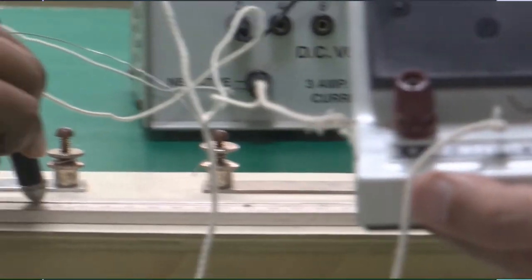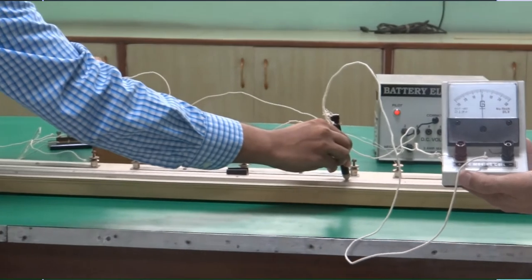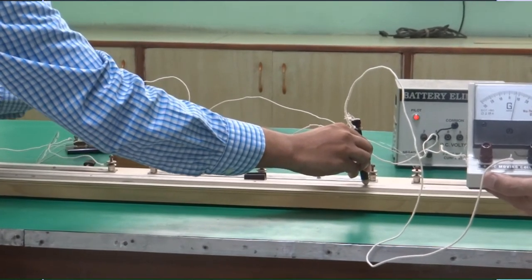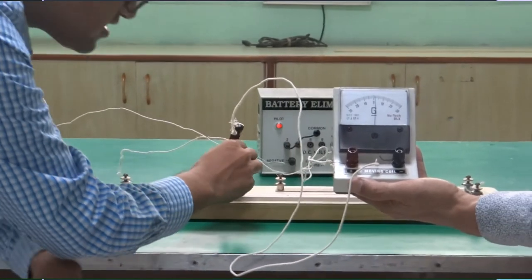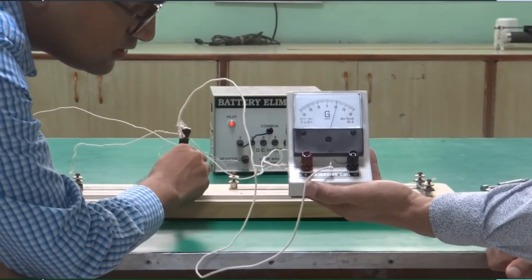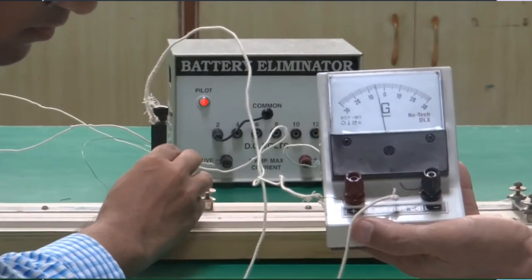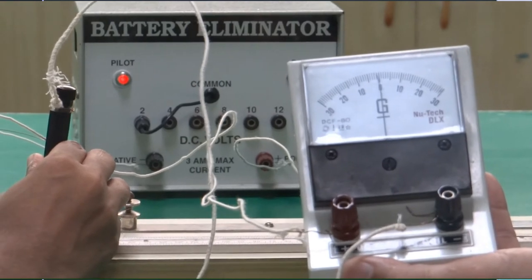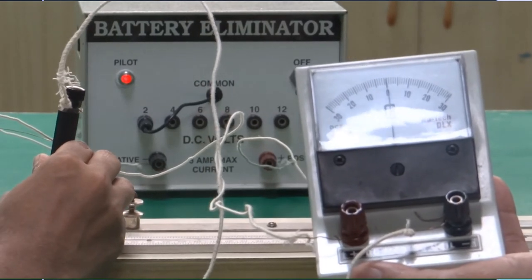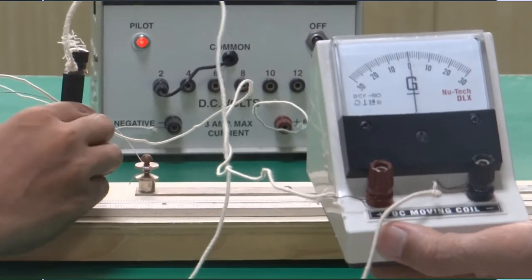For the next set of readings, take out another value of resistance. Now let's calculate the null point. Now the balance point comes at 68.5 cm.